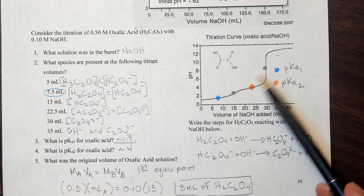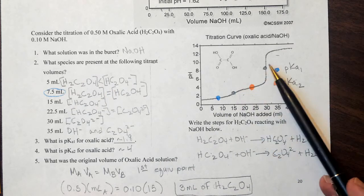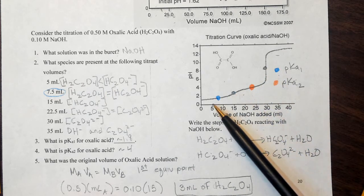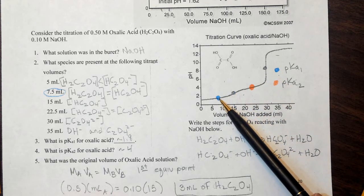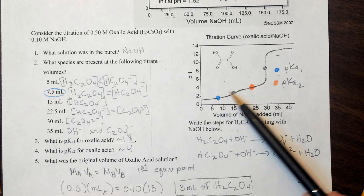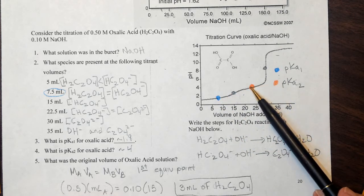So my endpoints were going to be in the steepest portions. So I had two different endpoints, and then halfway between each of those were going to be my half equivalence points that I could use to determine pKa1 and pKa2.